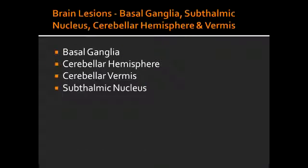What are the consequences of a basal ganglia lesion? Basal ganglia lesion can result in tremors at rest, chorea, and athetosis. What condition causes a basal ganglia lesion? Basal ganglia lesion can occur due to Parkinson's disease.